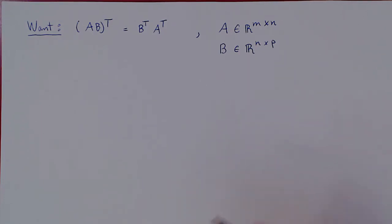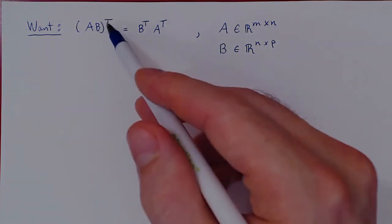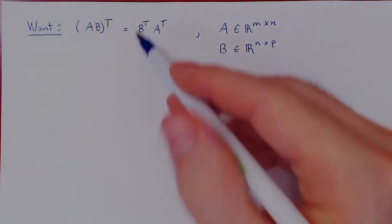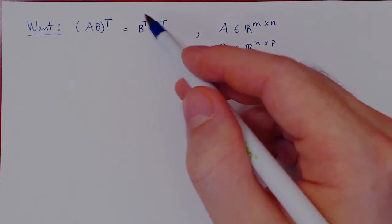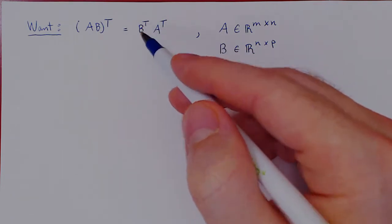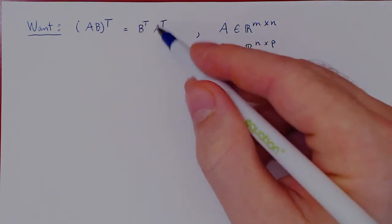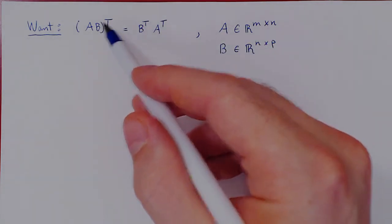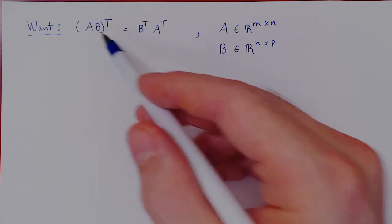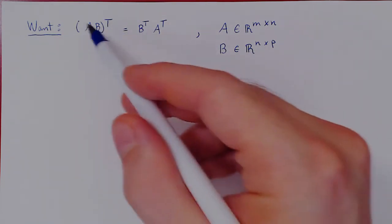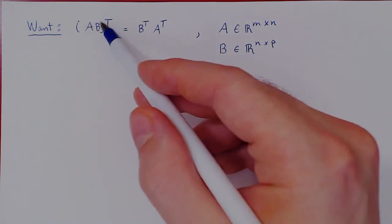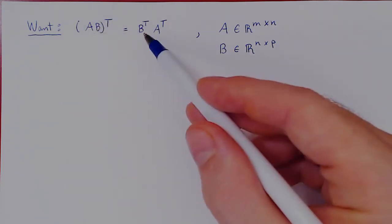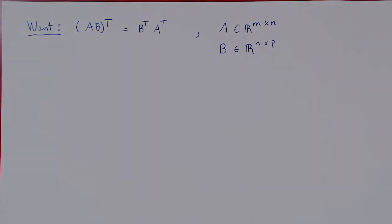Here's the problem. The claim is the transpose of A times B is equal to the transpose of B times the transpose of A. You have to be careful — you can transpose over a product, so you transpose each matrix individually, A and B, but you have to swap the order of the product.